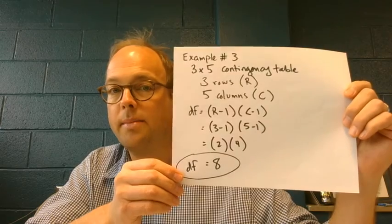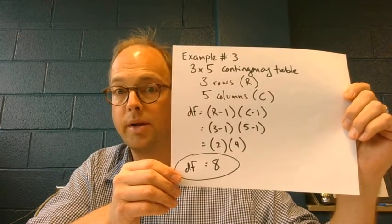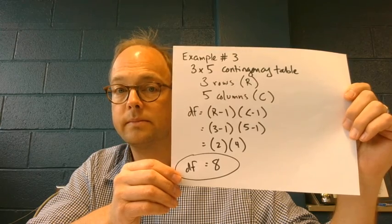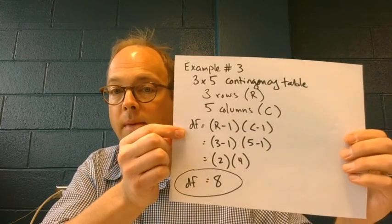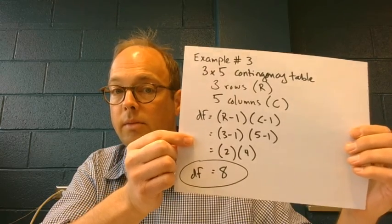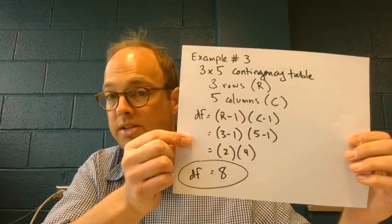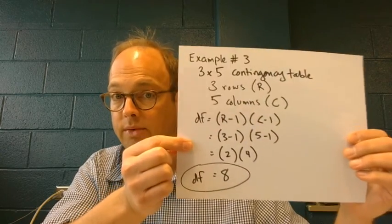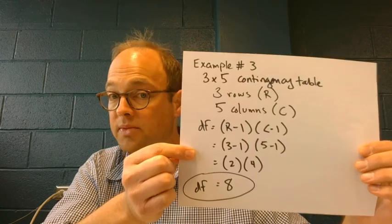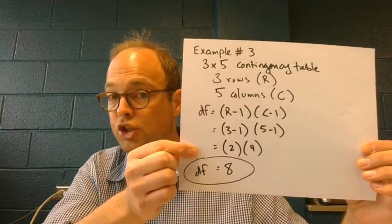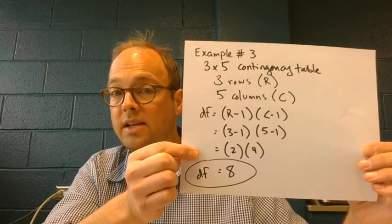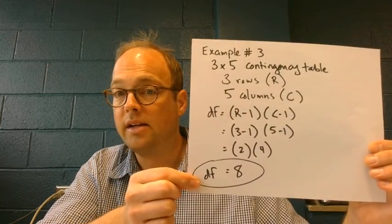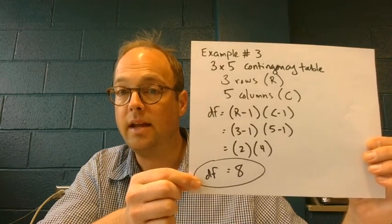Example number three involved a three by five contingency table — three rows, five columns. Degrees of freedom: R minus one times C minus one. In this case, three minus one times five minus one: three minus one is two, five minus one is four, two times four is eight. So for a three by five contingency table, the degrees of freedom would be eight.